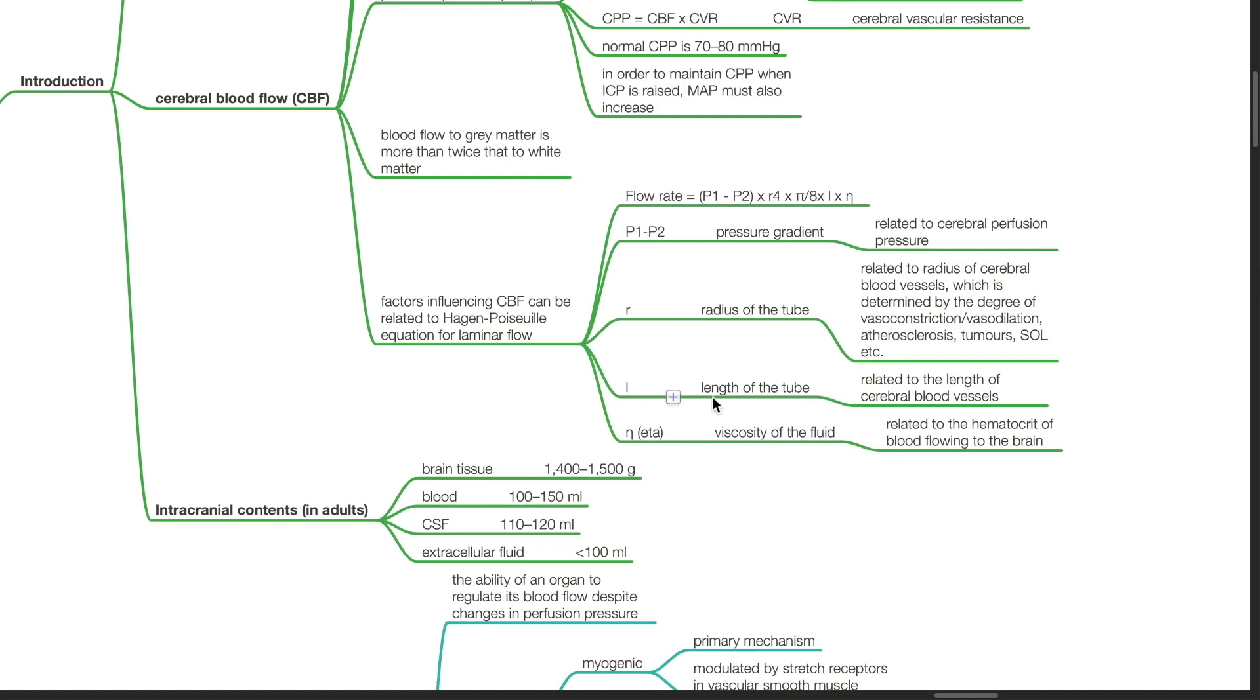L stands for length of the tube, which is related to the length of cerebral blood vessels. Eta stands for viscosity of the fluid in the tube, which is related to the hematocrit of blood flowing to the brain.